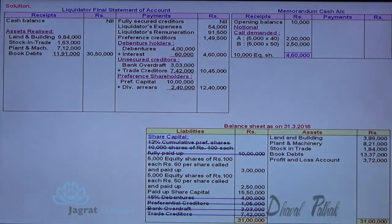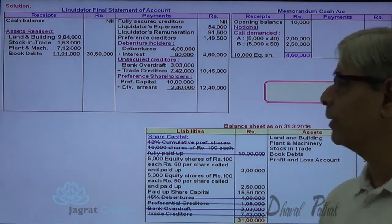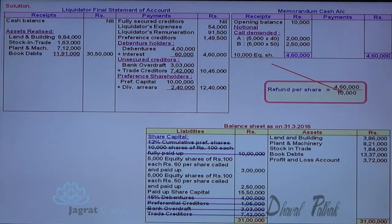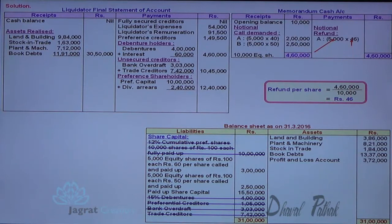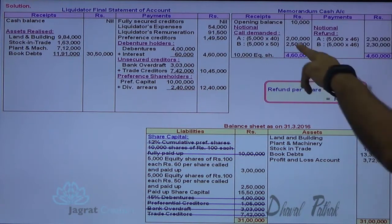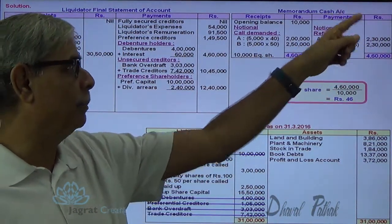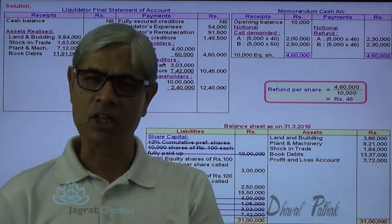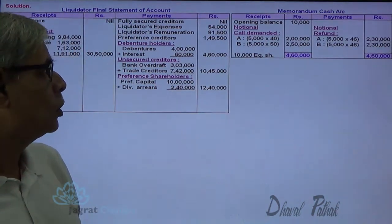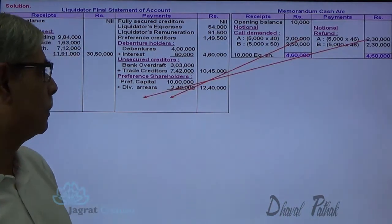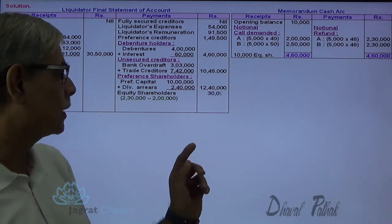Both types of shares are now 100% paid up — fully paid up — so there is no disparity between these two types of shareholders because of this notional last call. Now I work out the refund per share. Both shares are of face value 100, so refund per share = 4,60,000 divided by number of shares = 46 rupees refund per share. On A-type shares: 5,000 into 46 is the notional refund. Net payment to be made to A category is just 30,000.